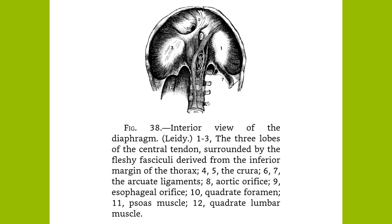During pregnancy they increase once more in size, preparatory to the secretion of milk, and in old age they atrophy. From the middle projects a small pinkish-brown conical eminence, the nipple, surrounded by a paler area, the areola. After the second month of pregnancy, both nipple and areola become darker in color, a point of great diagnostic value in early pregnancy.